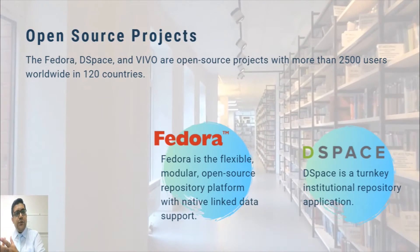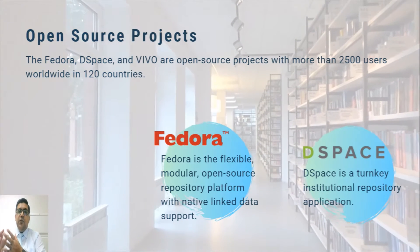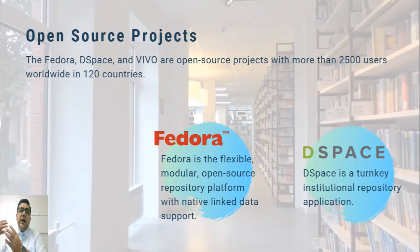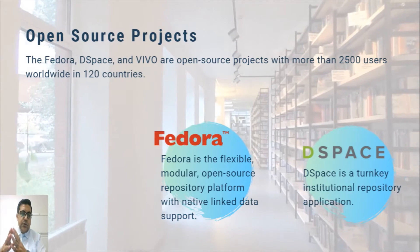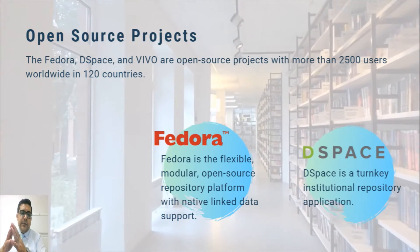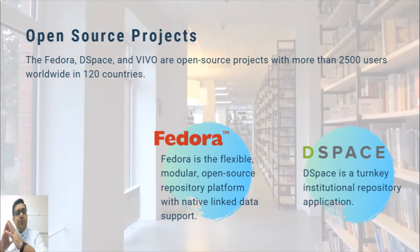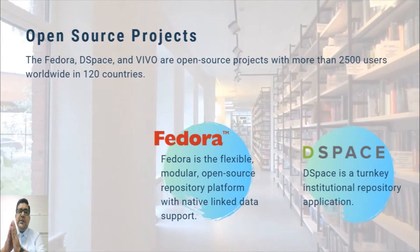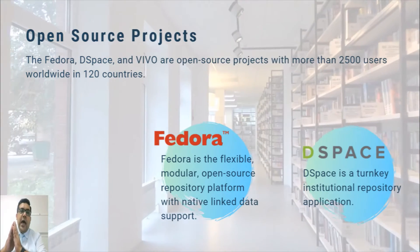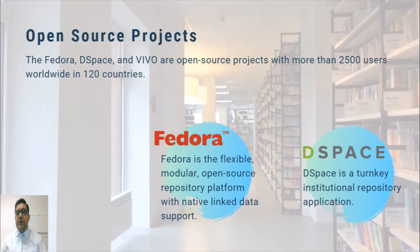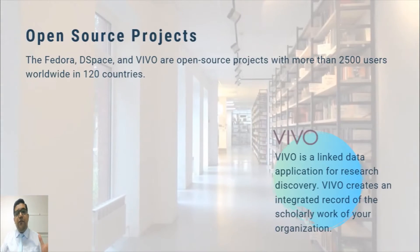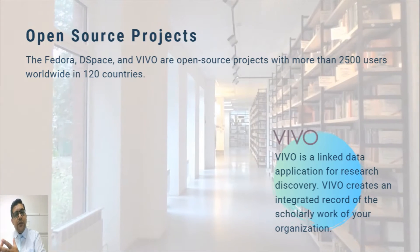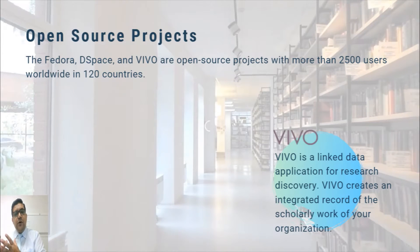DuraSpace along with Lyrasis leads three open source projects: Fedora, DSpace, and VIVO. These projects have more than 2,500 users worldwide in 120 countries. Fedora is a flexible, modular, open source repository platform with native linked data support. DSpace is a turnkey institutional repository application. VIVO is a linked data application for research discovery that creates an integrated record of the scholarly work of your organization.